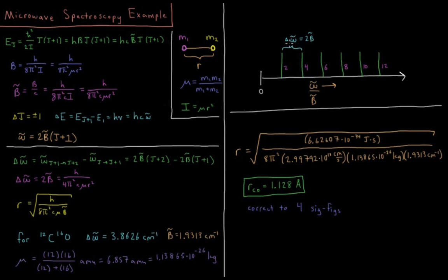If we can get a microwave spectrum of this rotation, we can figure out what B̄ is from the difference between two peaks. Delta ω̃ — the difference between two subsequent absorption peaks — equals ω̃(J+1→J+2) minus ω̃(J→J+1), which equals 2B̄(J+2) minus 2B̄(J+1), giving Δω̃ = 2B̄ = h over 4π²c·μR². We can rearrange this to solve for bond length R: R equals the square root of h over 8π²c·μ·B̄.